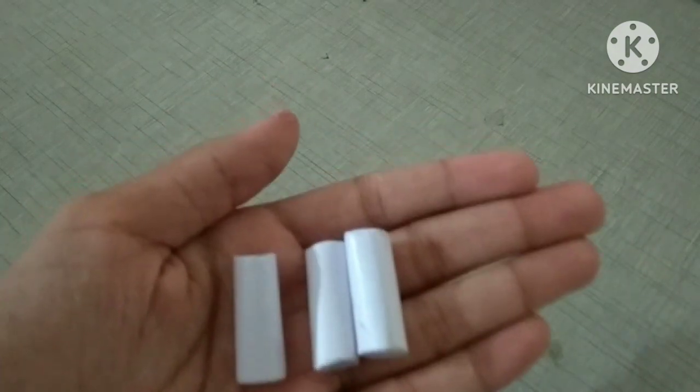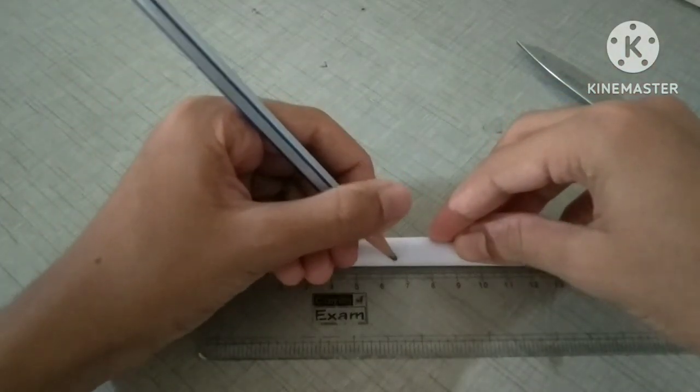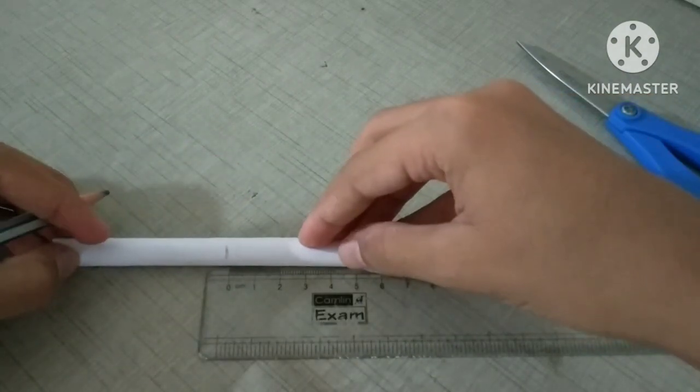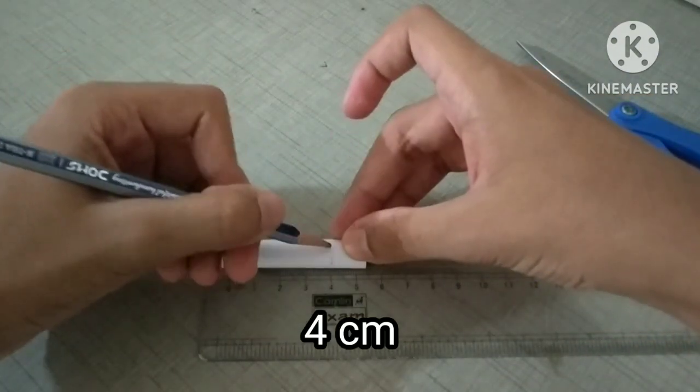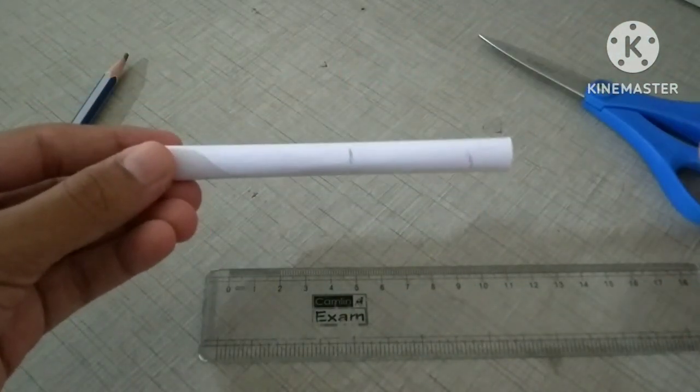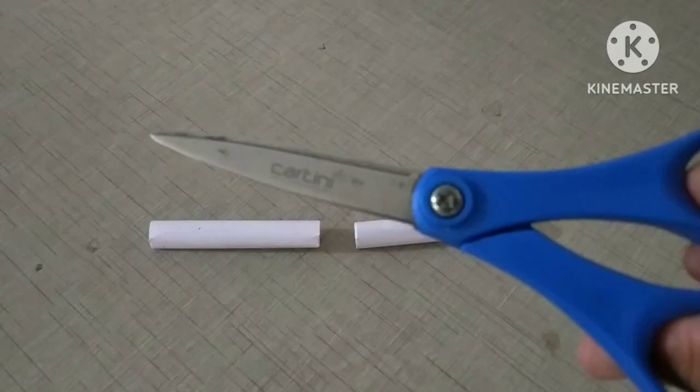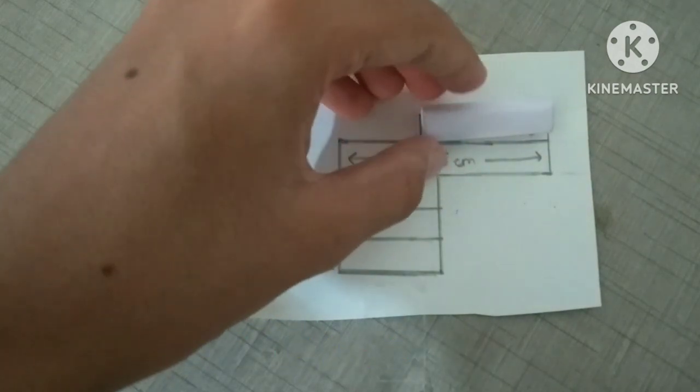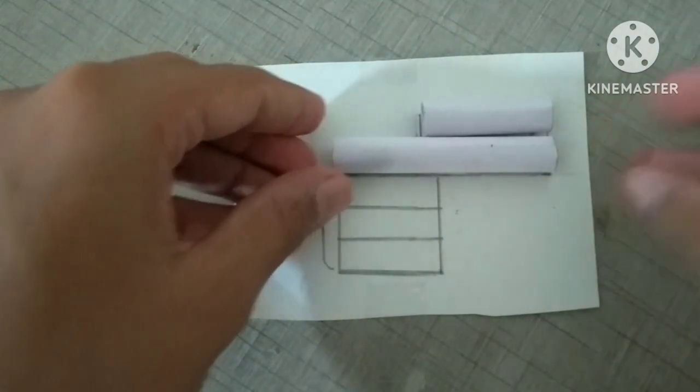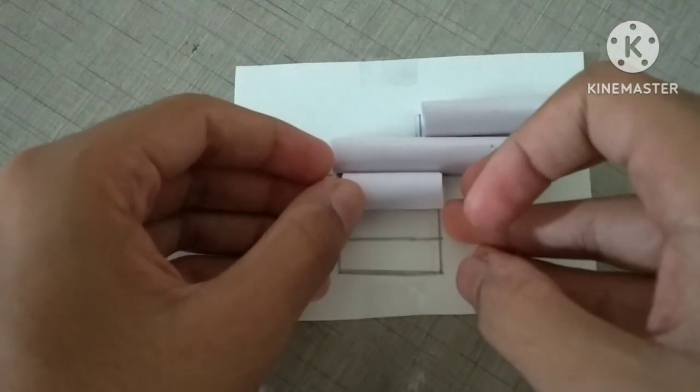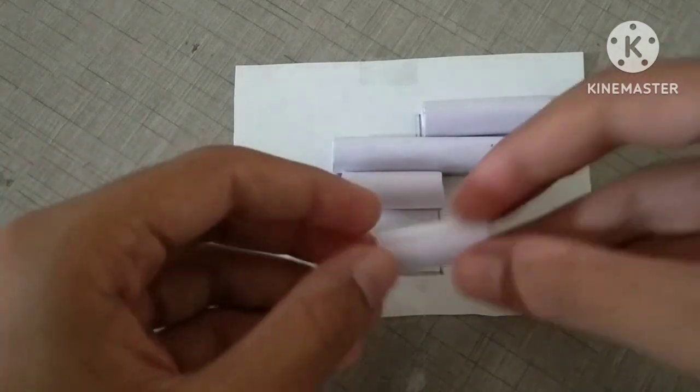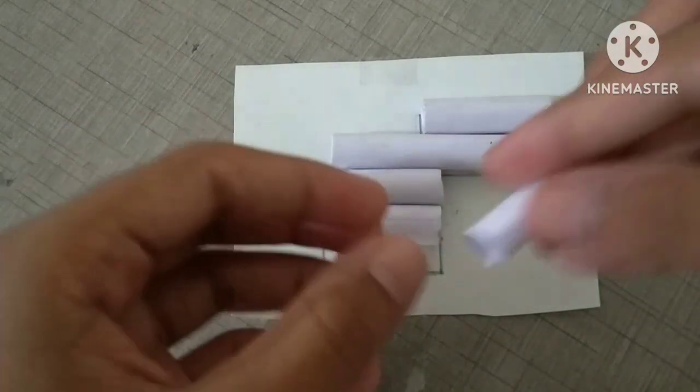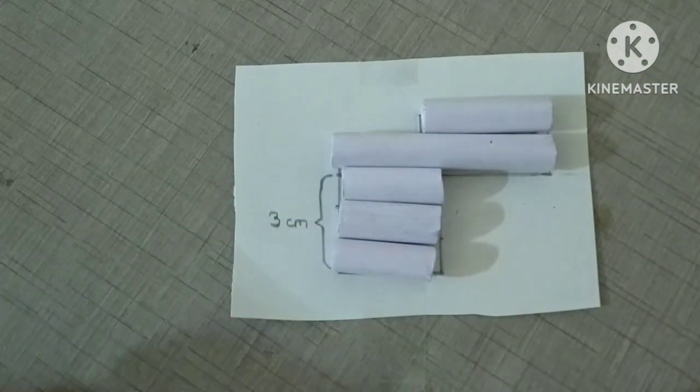We will then cut the tube in the length shown. This is the blueprint of the gun. We will stick it accordingly.